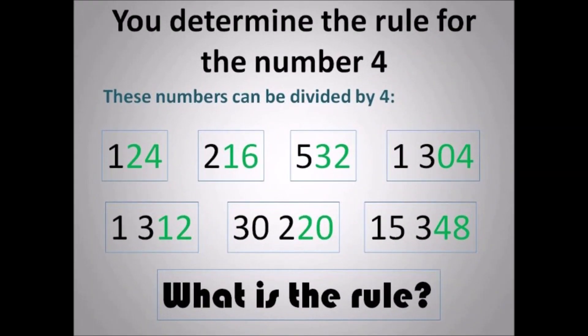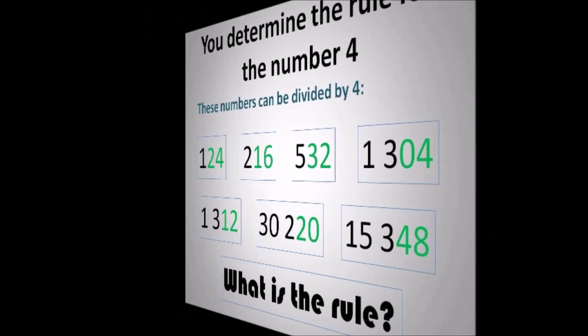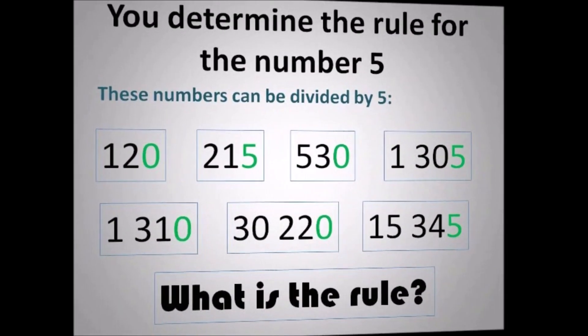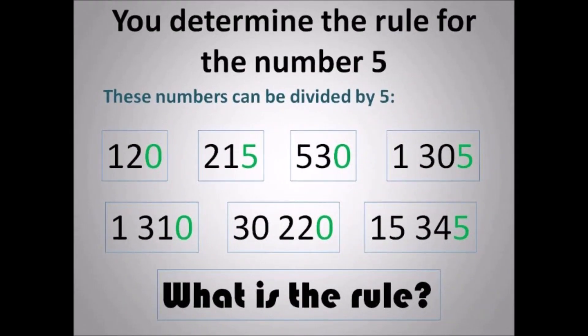You determine the rule for the number 4. These numbers can be divided by 4: 124, 216, 532, 1204, 1212, 30220, 15248. Why do I have those numbers highlighted in green? Once you know that answer, that would be what you would need to know for the rule.